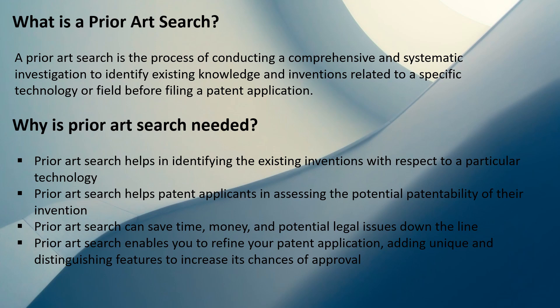Prior art search also enables you to refine your patent application by adding unique and distinguishing features to increase its chances of approval. When you conduct a prior art search and obtain a list of references — similar prior arts that are existing — you can modify your patent application to ensure it does not cover those inventions, thereby distinguishing your invention from similar prior arts and improving your chances of getting a patent grant.